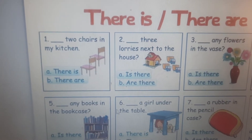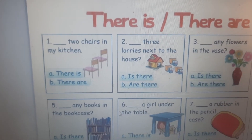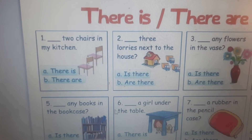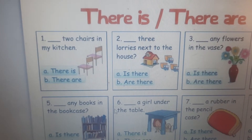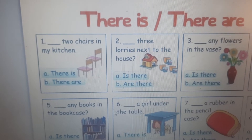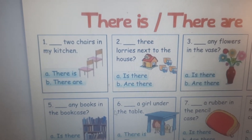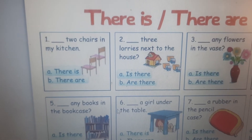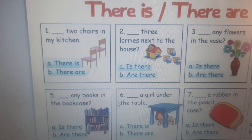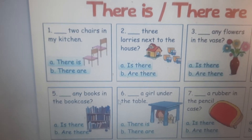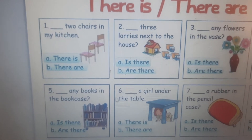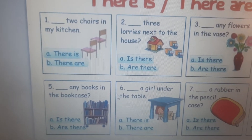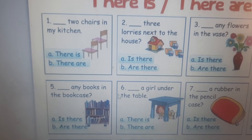Look at the first picture. How many chairs can you see? Yes, two chairs. How many chairs? There is two chairs or there are two chairs? Yes, there are two chairs. If it is one singular, you will use 'there is'. If there are more than one, you will use 'there are'. There are two chairs in my kitchen.